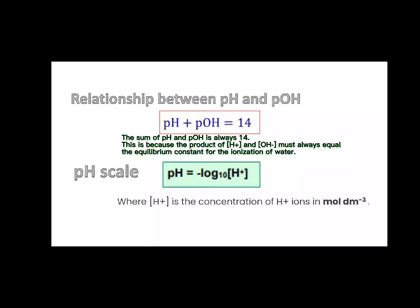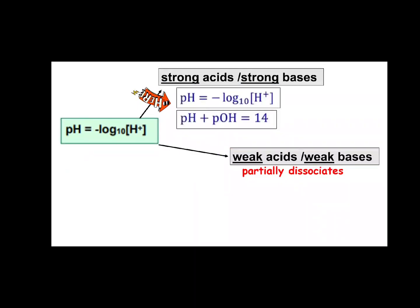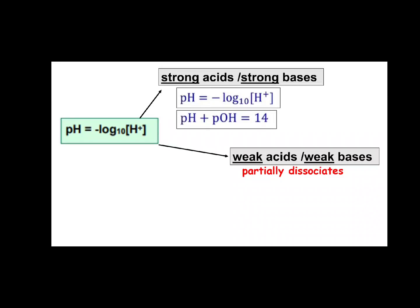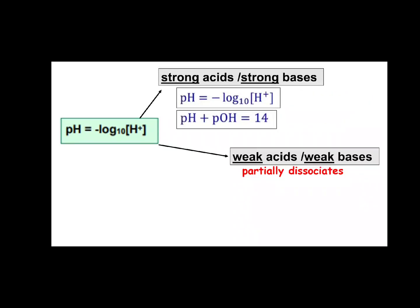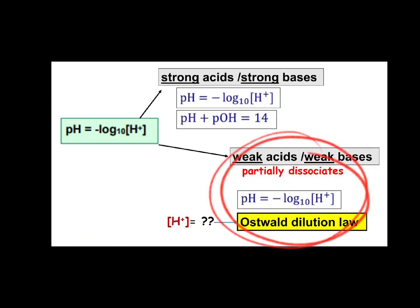Some students may be confused about the formula here. To determine the pH value for both cases, either strong acid or weak acid, we can use this formula directly in the case involving strong acid or strong base. This is because strong acids and strong bases are completely ionized in solutions. Therefore, for strong acid, the pH is directly related to its concentration. However, for weak acid, this is not true, as the pH depends on the dissociation constant Ka. Therefore, we need to use Ostwald's dilution law to determine the concentration of ions in the weak acid solution first, before we use the pH formula. I will discuss this part again in my next video.